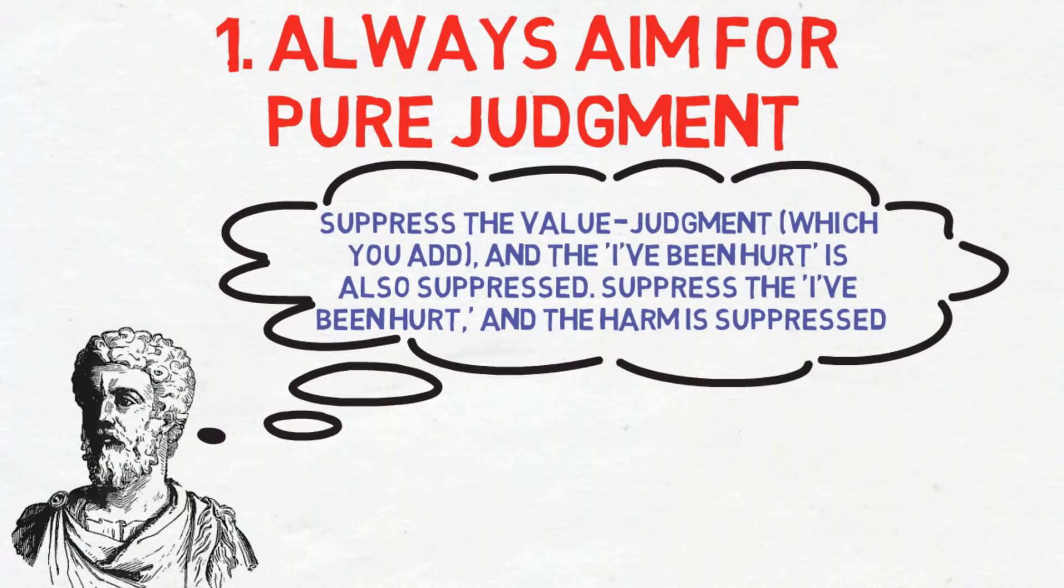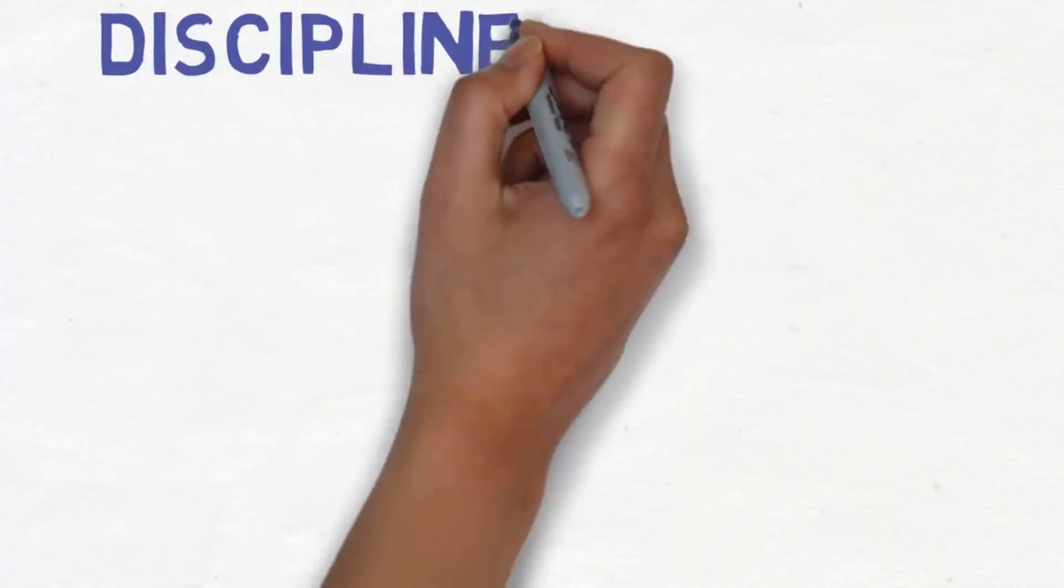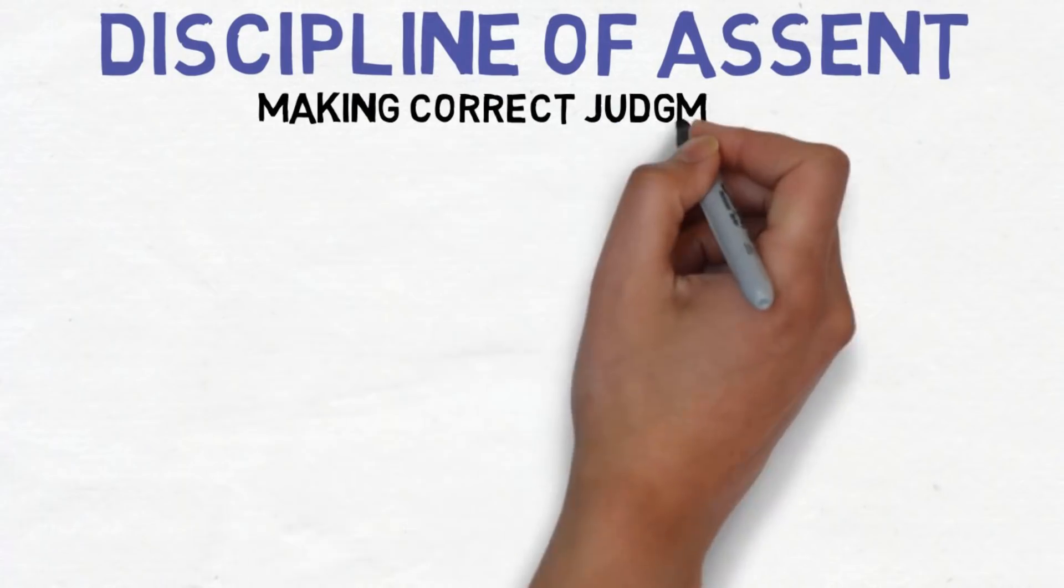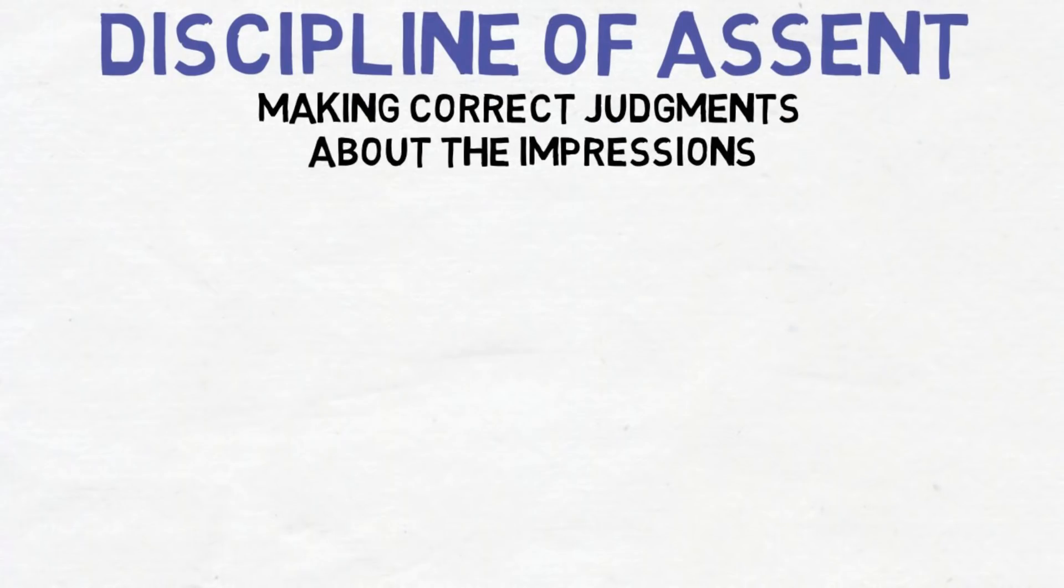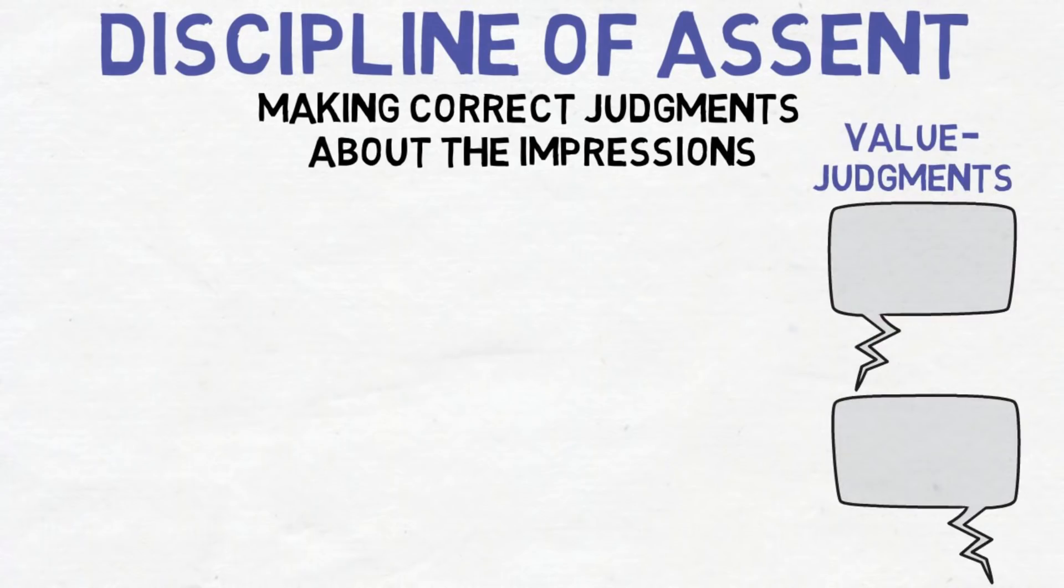This rule is influenced by Epictetus' discipline of assent, which involves making correct judgments about your impressions, that is the nature of the external world and events that occur in it. Aurelius explains that we make judgments about everything, but instead of making a pure judgment, we make value judgments by adding a personal twist to our consideration.